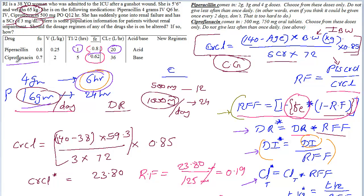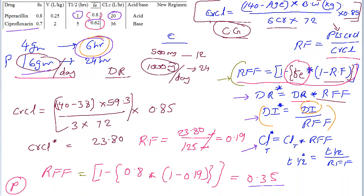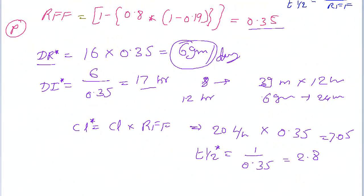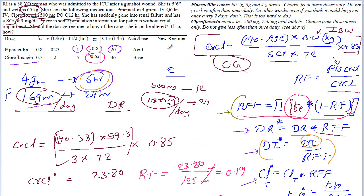Welcome back. Now we're going to solve the second problem, which is ciprofloxacin. Just now we solved for piperacillin. We calculated the dose rate, the dose interval, and also the clearance and t-half. Finally, we identified the dose regimen. Now we're going to solve for ciprofloxacin.